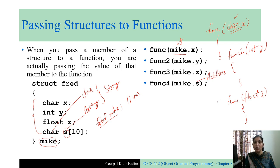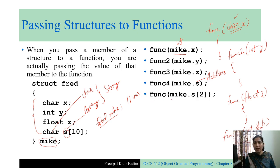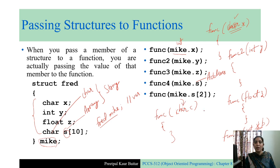When passing an array name like `mike.s`, we are not passing a value but an address. So in the function definition we need something that can receive an address — a pointer. We need `char *p` to store the base address of that character array. If you want to pass an individual character from the string, write `mike.s[2]` for the character at index 2, and the function definition will need just a `char` parameter to receive it.